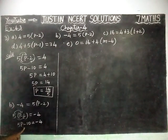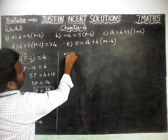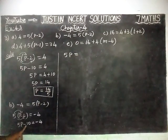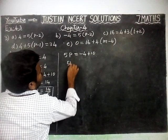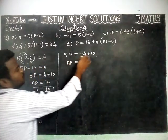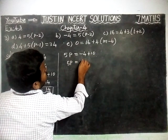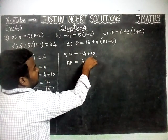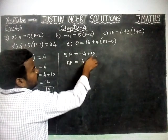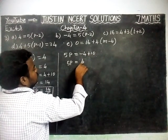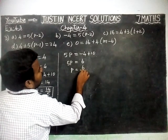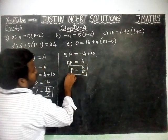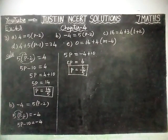This minus 10 is going to the right hand side. So 5P is equal to minus 4, and this minus 10 becomes plus 10. Now 5P is equal to minus 4 plus 10 equals plus 6. Because signs are different, we have to find the difference. Difference is 6. The greatest number has plus sign, so plus. P is equal to 6 divided by 5. So the value of P is equal to 6 by 5.